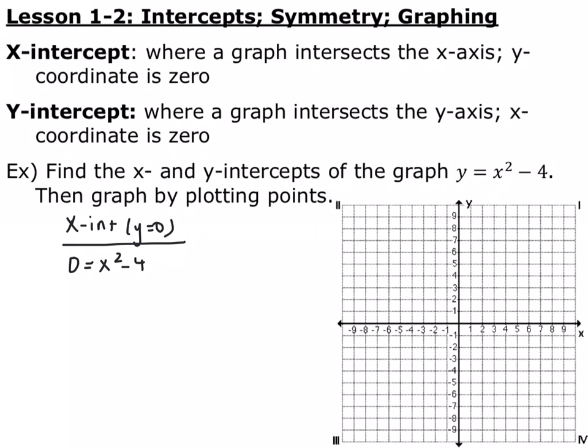Go ahead and pause the video and solve for x. You should have gotten that 0 is equal to x squared minus 4, which means 4 is equal to x squared. If you take the square root, don't forget you have positive and negative 2. Negative 2 squared is 4 and positive 2 squared is 4. So you end up with two x-intercepts, graphed over here in red.